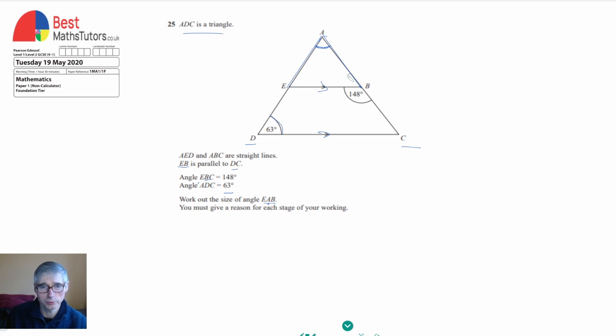For example we could find this one here. Because I've got angles on a straight line, I can work out this angle. We can see that the angles on a straight line add up to 180, so this angle here is going to be 180 minus 148, and if I work that out that's going to be 32 degrees.